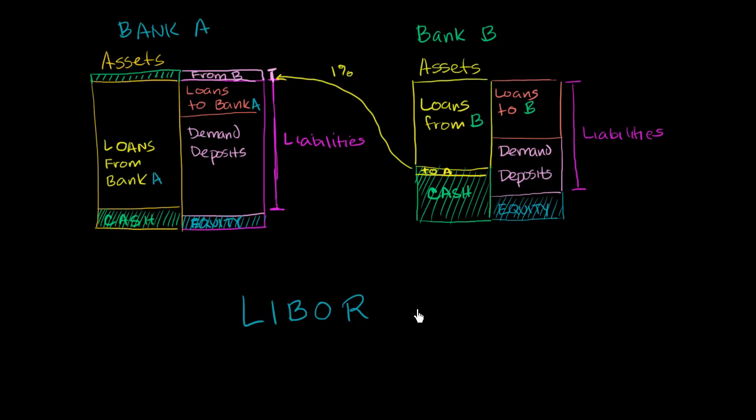They'll quote that as the overnight LIBOR. So they'll quote it at, say, maybe it was 1.2% across all of the banks that we surveyed.